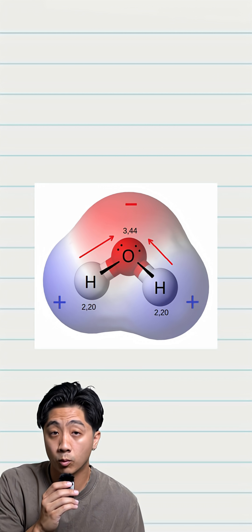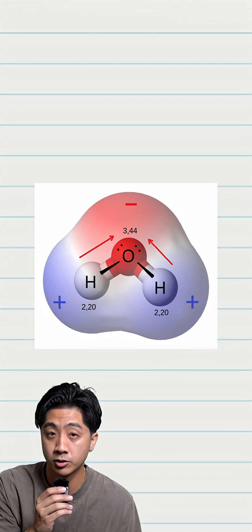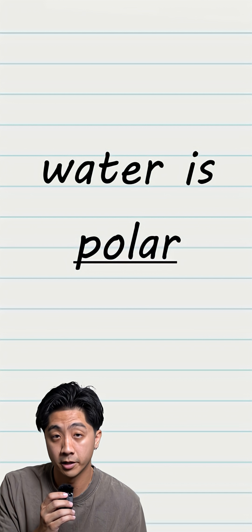Oxygen is electronegative. So in a water molecule, the electrons are pulled towards the oxygen, making that side more negative and the hydrogen side more positive. This means water is polar.